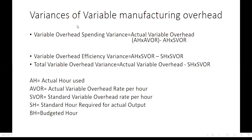Here are the formulas for variances of variable manufacturing overhead. The first formula for variable overhead spending variance is: actual variable overhead minus actual hour multiplied by standard variable overhead rate. For variable overhead efficiency variance, the formula is: actual hour into standard variable overhead rate minus standard hour into standard variable overhead rate. The term 'actual hour into standard variable overhead rate' is common — it is the last part of spending variance and the first part of efficiency variance.